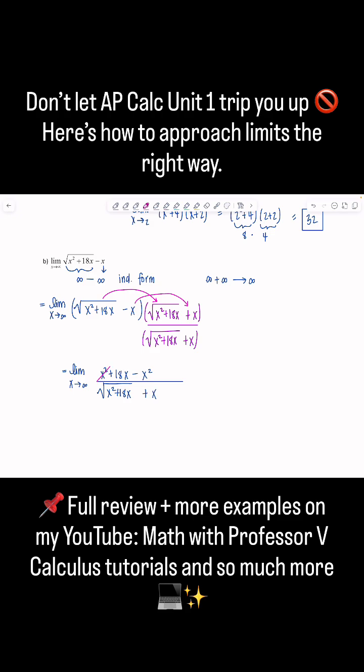Okay, so now the x squareds cancel. And then looking at what resulted, x is going to infinity. So the numerator is approaching infinity. And the denominator, this is approaching infinity plus this is approaching infinity. It's also approaching infinity.